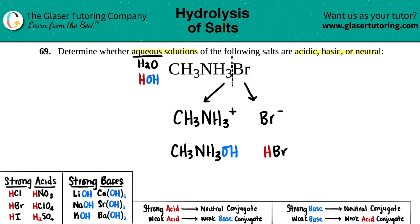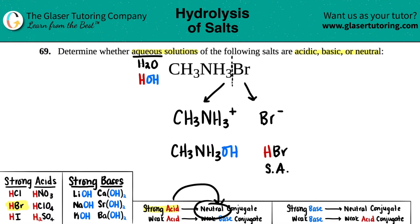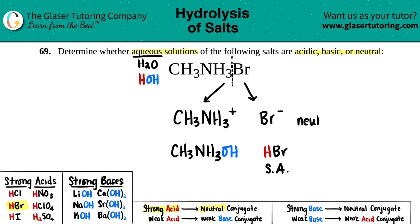From these products we can determine whether our original salt is acidic, basic, or neutral. Starting with HBr: is it a strong acid or strong base? It's a strong acid. Any time you have a strong acid, its conjugate is so weak that it's deemed neutral. So Br⁻ is neutral and we can cancel it out — it has nothing to do with acidity or basicity.